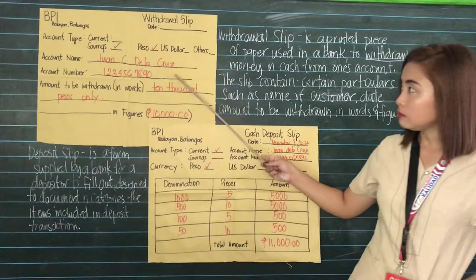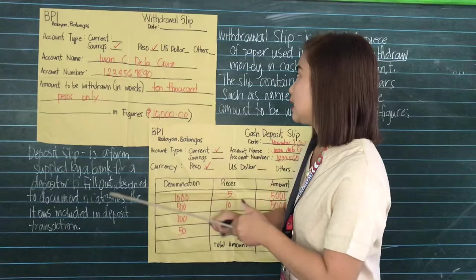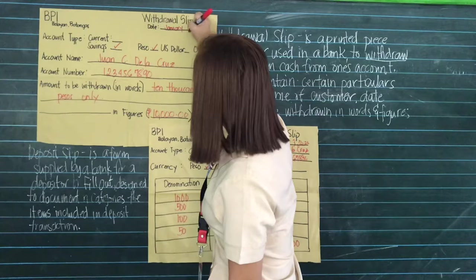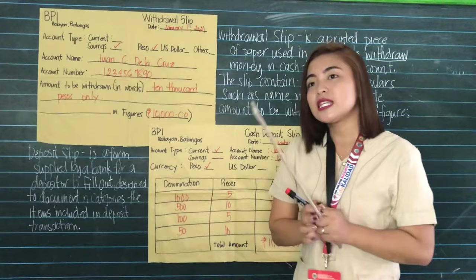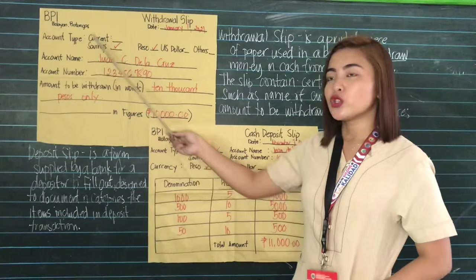Here is an example of a withdrawal slip. Indicated in the upper left part of a withdrawal slip is the date — when the transaction is being processed. Let's say the date today is January 1, 2021. That is the date of the transaction that you are going to put or fill out here in the date portion.